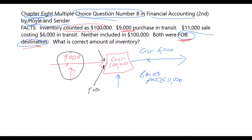So it is being sent to another company, a buyer. And because it's FOB destination, it will switch to their goods when it reaches its destination. Because it has not reached its destination, this inventory is still considered our inventory.